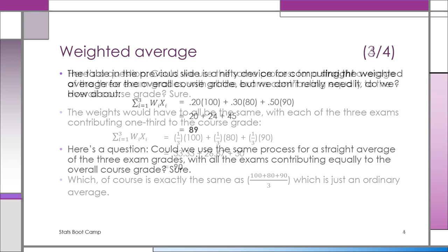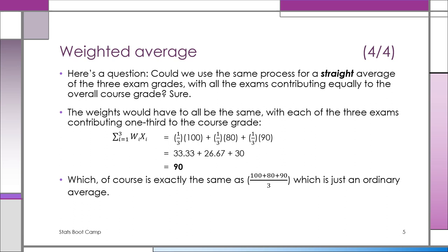Here we showed that we could use the same formula for a weighted average for the straight average, because if we have three exam grades and they all have the same weight, we're talking about one third, one third, one third. It turns out that that average would be 90, not 89 as we had before when the final exam was worth more.